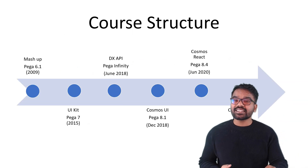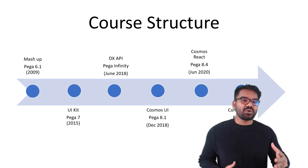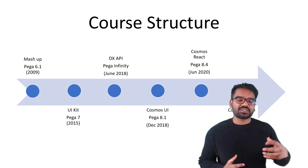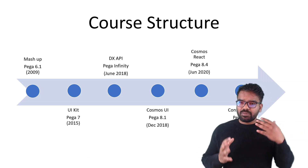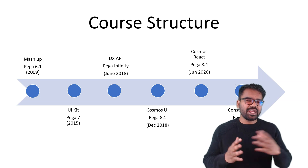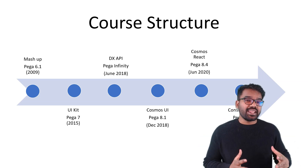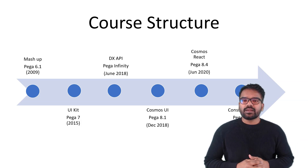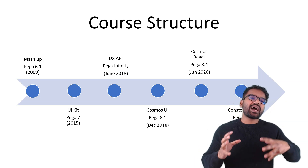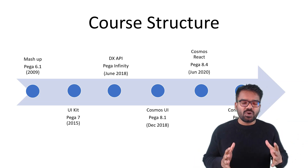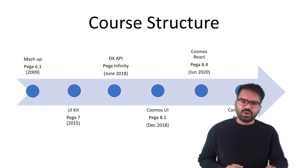So how is the course structure going to be? From the name itself we can say it's going to be a journey where we end up at constellation. I'm going to explain everything right from the start — from the UI kit, Mashup, then we enter into DX API, Cosmos, Cosmos React, and finally we will talk a lot about constellation. This is Pega's UI evolution, presented in order so you understand how Pega evolved with the user interface.